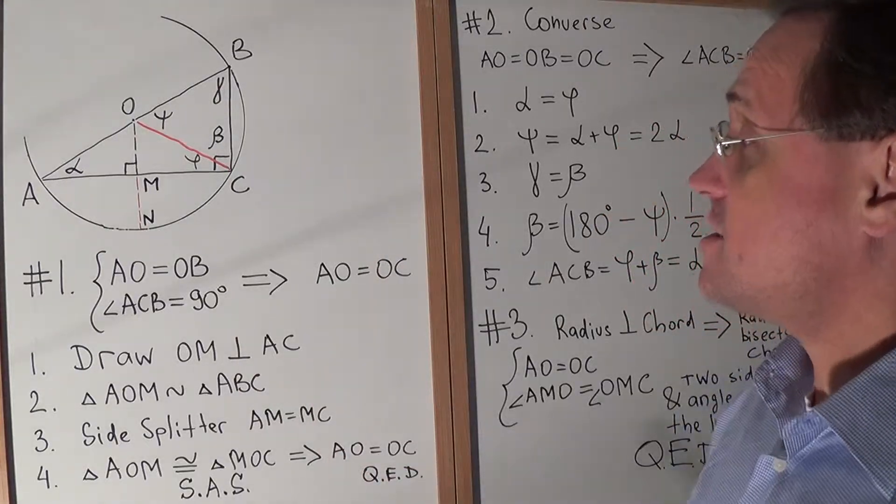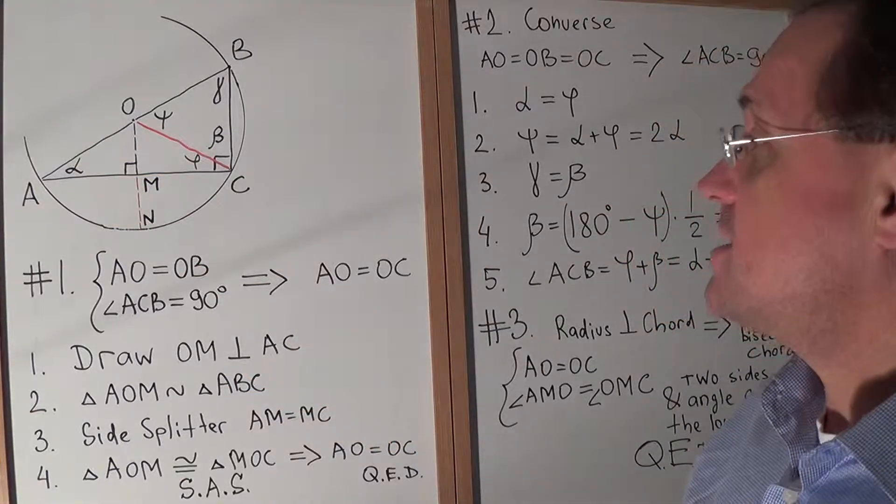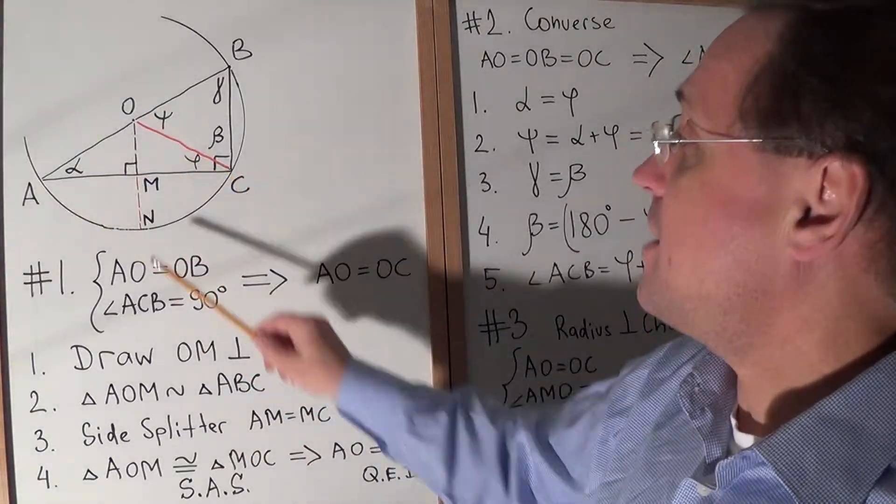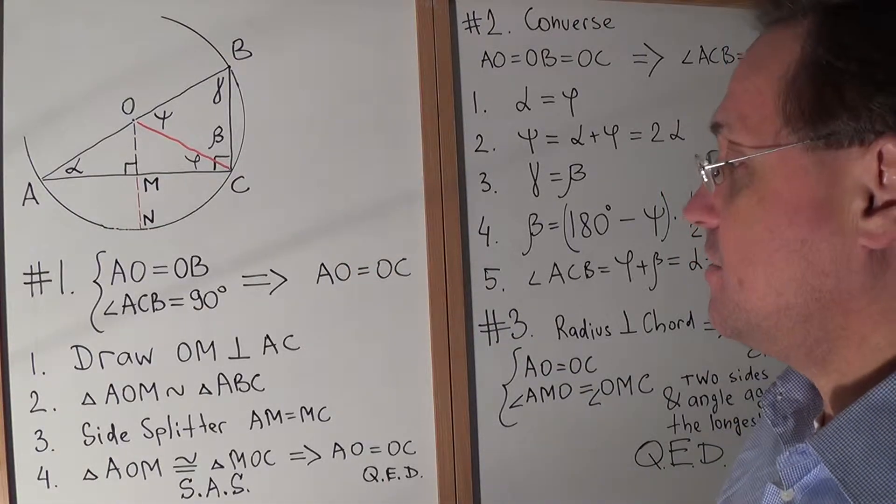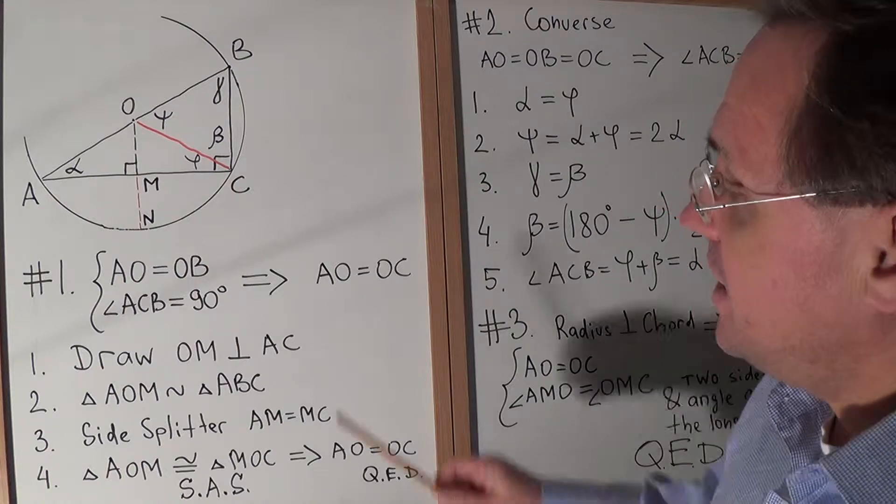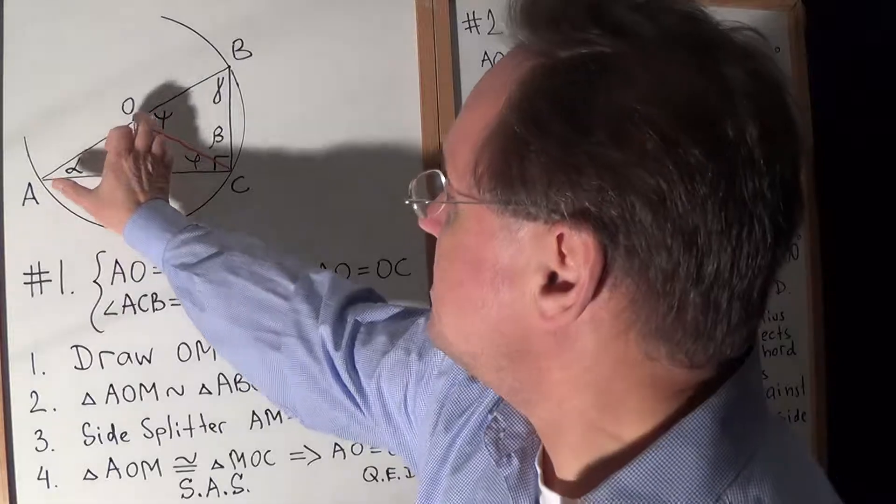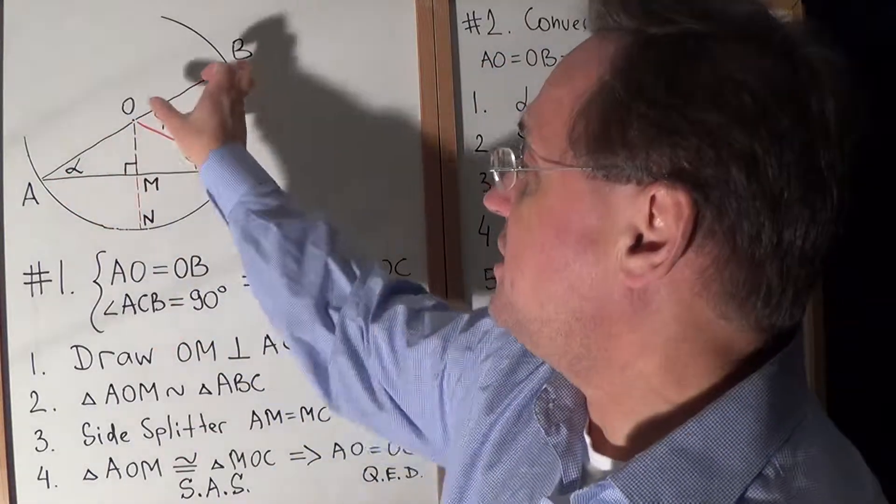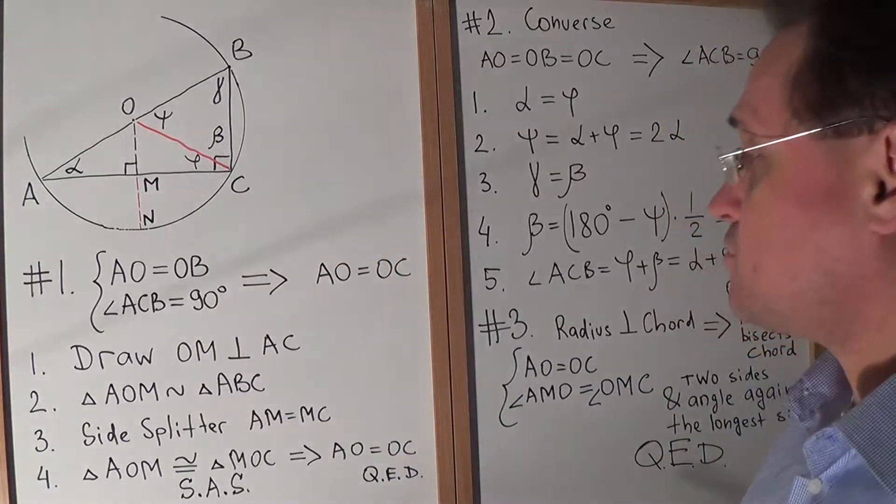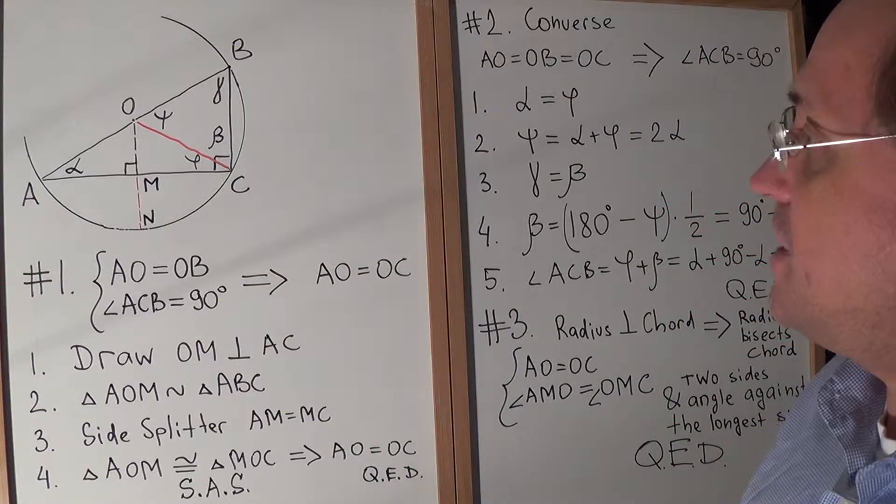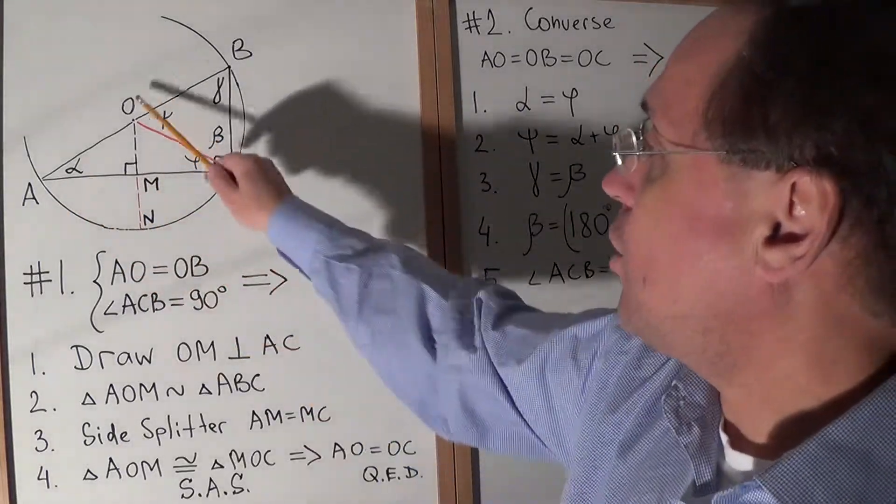First, let's draw OM perpendicular to AC. Second, we see that triangle AOM and triangle ABC are similar by AA postulate. Now using the side splitter theorem, this equals this, their radius, so therefore AM equals MC.